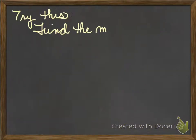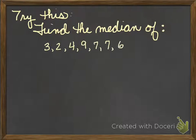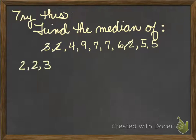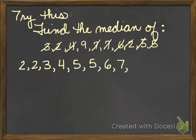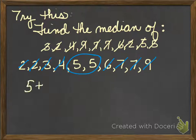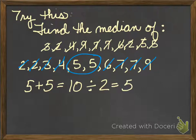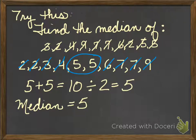Try this one. First thing we're going to do is put them in order from least to greatest and start crossing out. I have two middle numbers: five and five. Add them up, divide by two — my median is five. On this one, I didn't really have to add and divide by two because they were the same number, but just a reminder: if you have two in the middle, you need to add them and divide by two. If you only have one in the middle, that's the median.